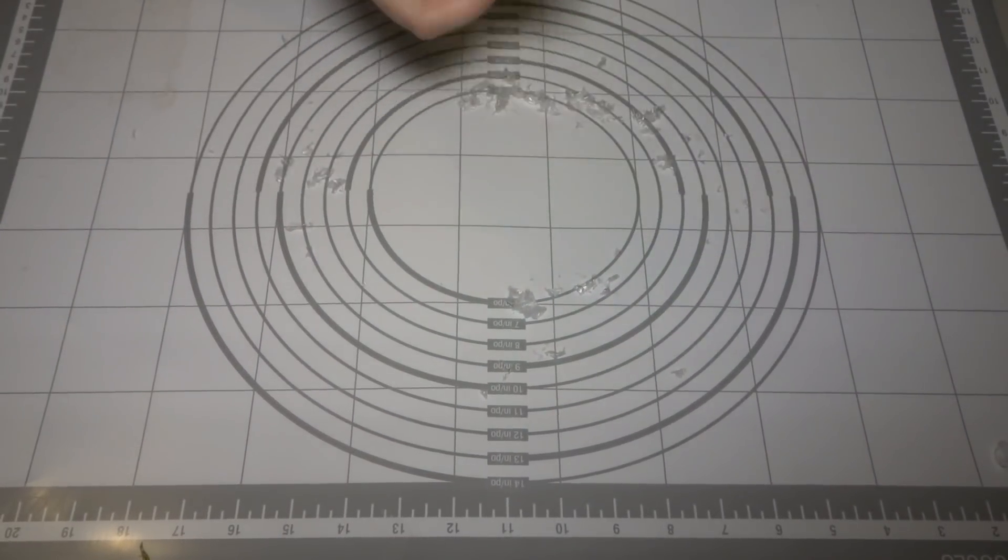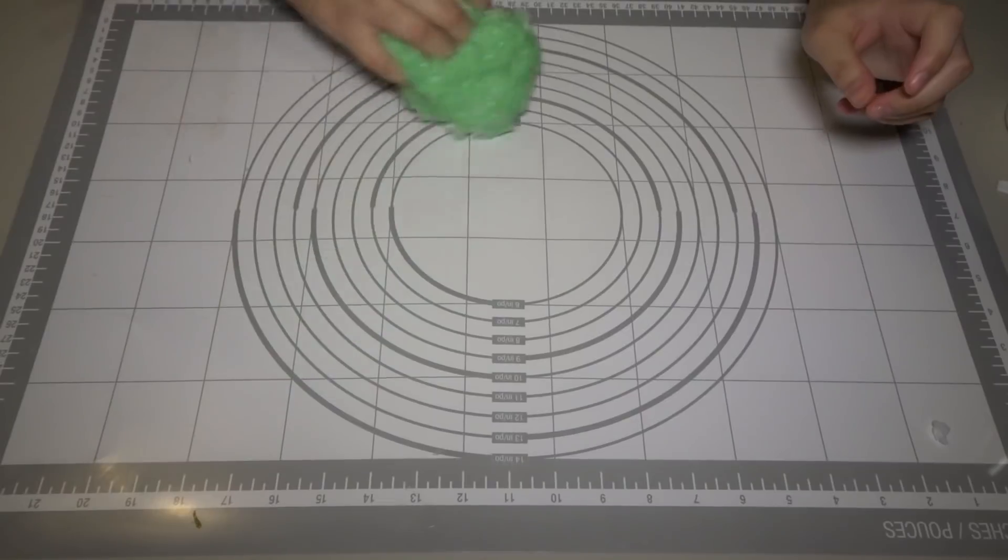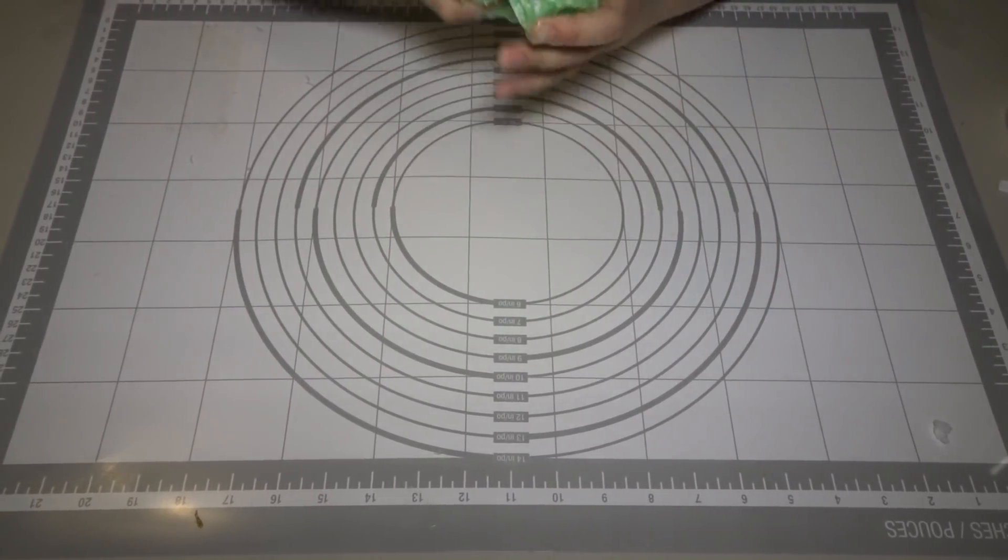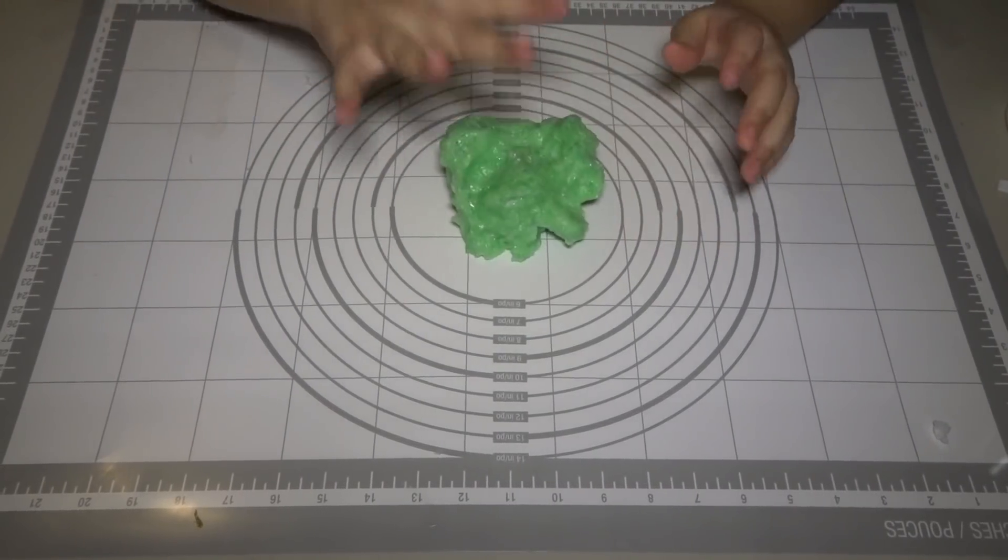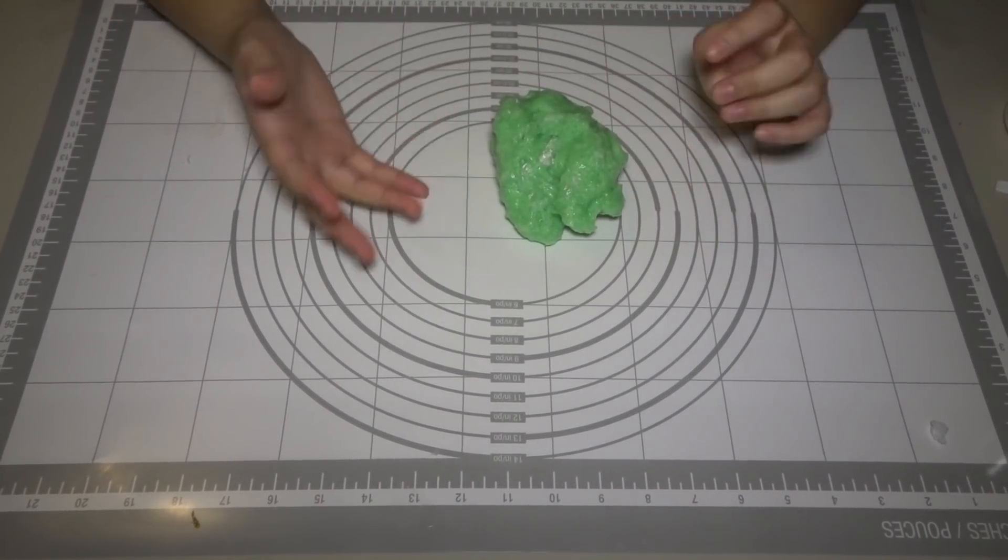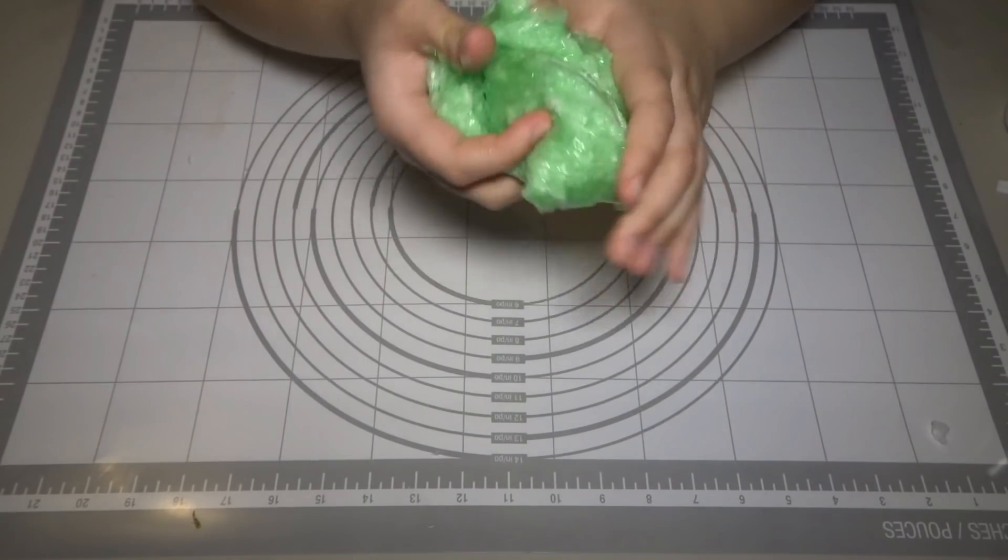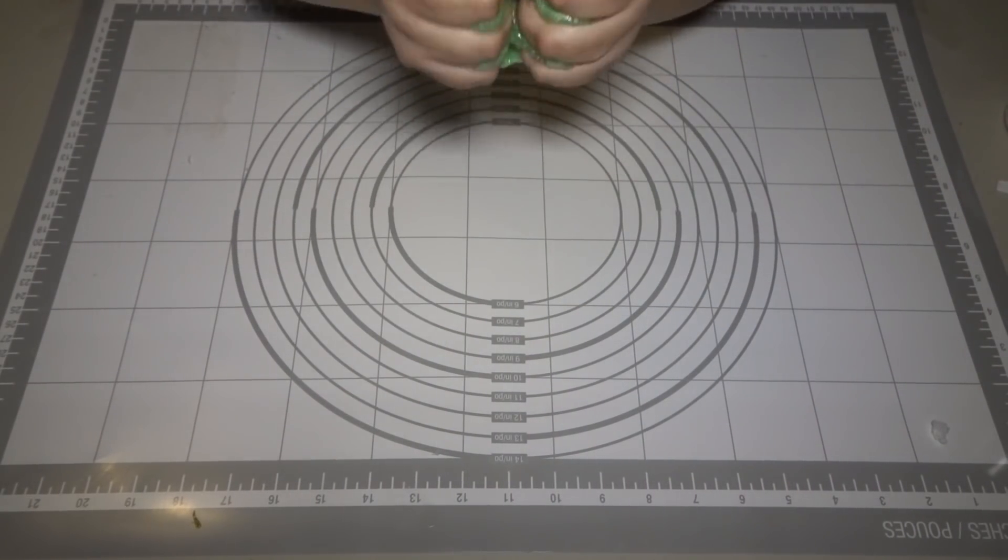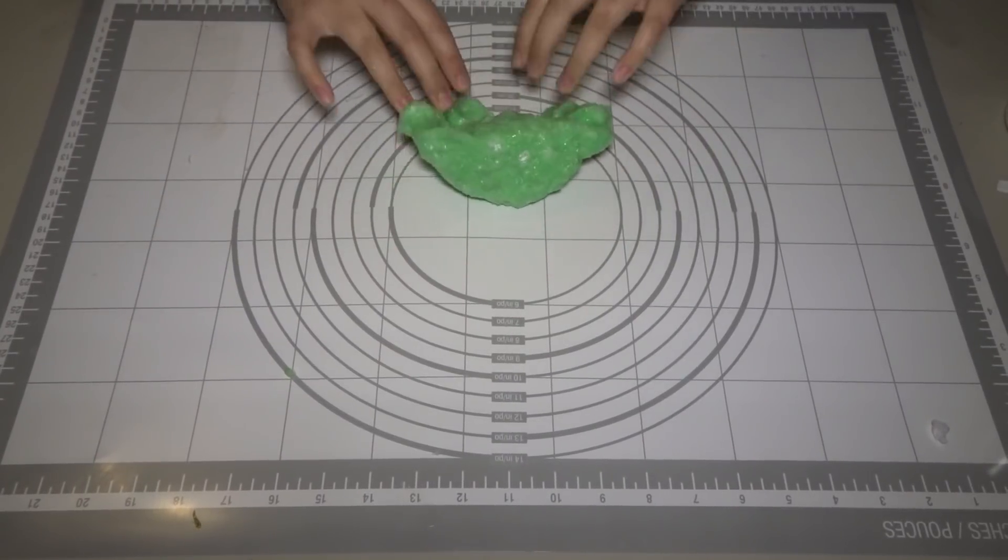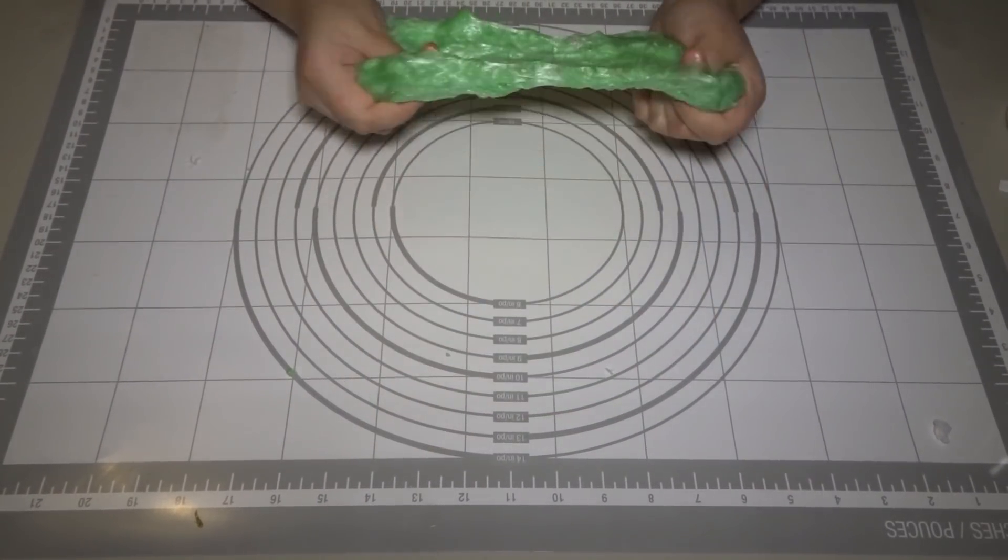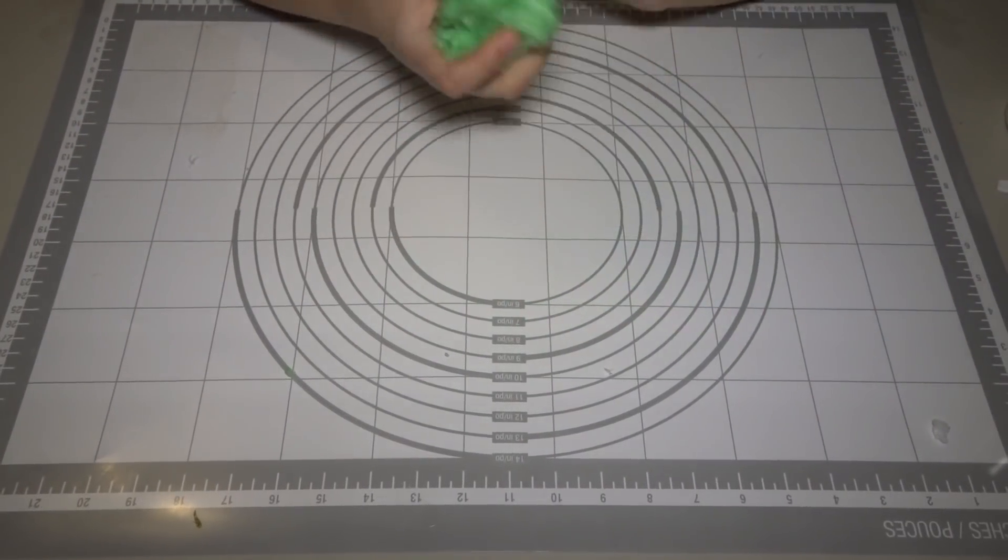You can either add in more until it's not sticky or just add in more activator if you like the consistency it's at. But I've never made this slime before. So I don't know when to stop. As you guys can hear, it is quite crunchy already. Even though we're not done adding more snow, I still want to add in some more. But let's give it a little test. Thumbs up! So it is really crunchy because of all those little bubbles and it actually looks really, really cool. It looks like goo kind of thing. Glitter goo.